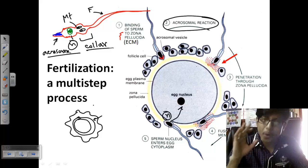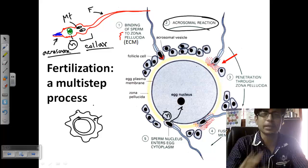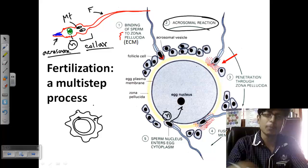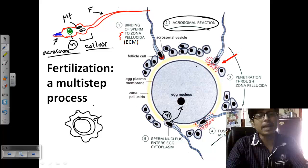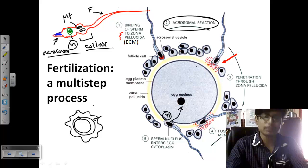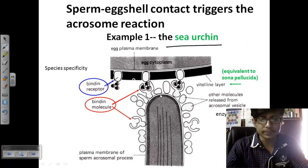It is important to note that only one sperm can fertilize one egg — this process is very tightly regulated. The egg cell does not allow more than one sperm to fertilize it. Although sperms are produced in huge quantities, most are lost, and only one sperm wins and fuses its nucleus with the egg nucleus to produce a zygote. The blockage of multiple sperm entry is called prevention of polyspermy.